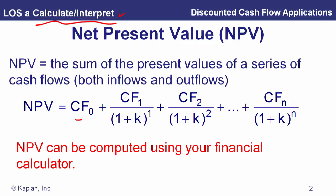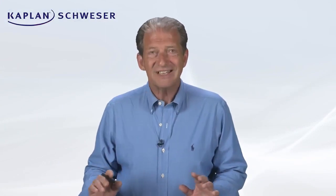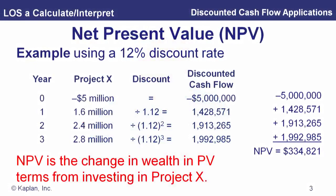We can calculate this with the financial calculator. These cash flows could have different signs. For this project, we're going to use a 12% discount rate. Our project has an initial outlay of $5 million — a negative cash flow — and then positive cash flows over the next three years of 1.6, 2.4, and 2.8 million. Using 12%, we take the present value of each of those future cash flows. The initial outlay is at time zero, so that is already a present value of minus $5 million. We sum them up and the net present value is $334,821.